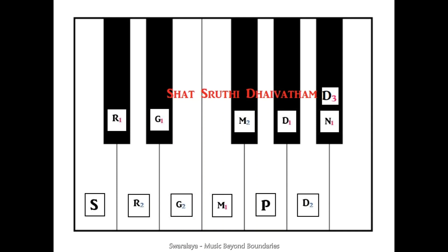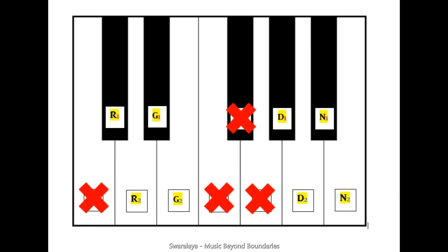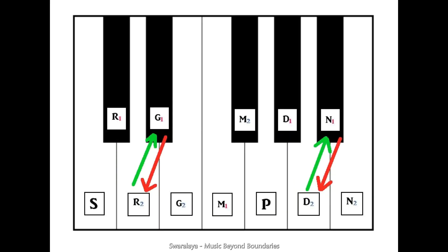Now for Gaantaram and Nishadam, we have the same methodology in identifying the Vivadi and they have the same names for the Vivadi representation. Vivadi Swaras share their frequencies with the immediate neighboring note. Ri had its Vivadi Swara with Ga, and Da took its Vivadi from Ni. But Ga and Ni will take their Vivadi Swaras from their previous neighbors, because after Ga you have Ma 1, which is fixed, and after Ni you have Sa, which is also fixed.